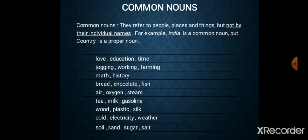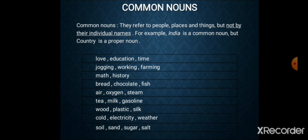Examples of common nouns: love, education, time, jogging, working, farming, math, history, bread, chocolate, fish, air, oxygen, steam, tea, milk, gasoline, wood, plastic, silk, cold, electricity, weather, soil, sand, sugar, salt. These names are on a general basis — no one name is given on an individual basis — so such words are known as common nouns.